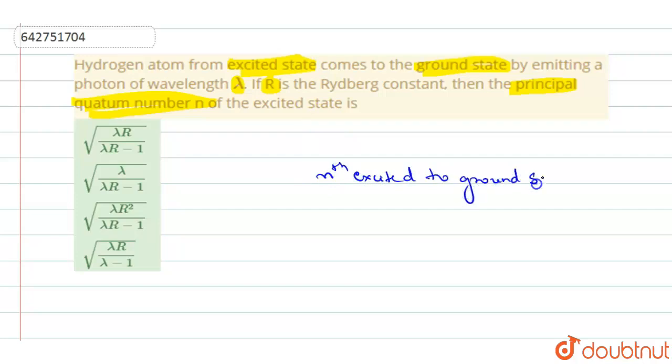Since the transition is from nth state to ground state, we shall take n1 will be equal to... Means it is coming back to the first state, no? So, we shall take it as n1 is equal to 1 and n2 is equal to n.